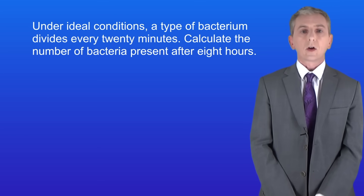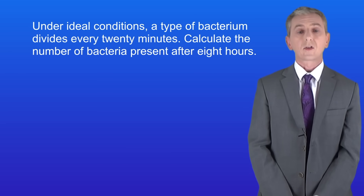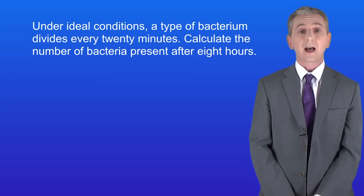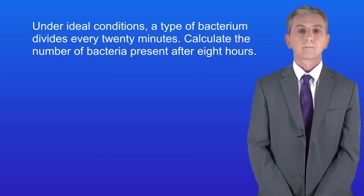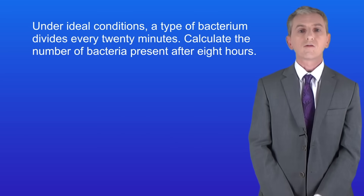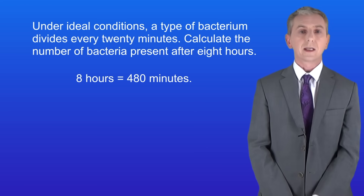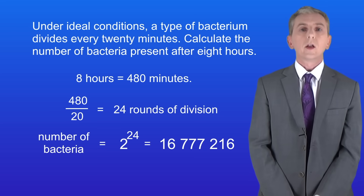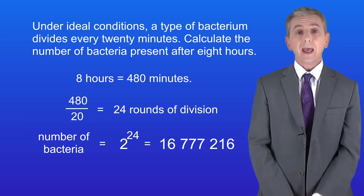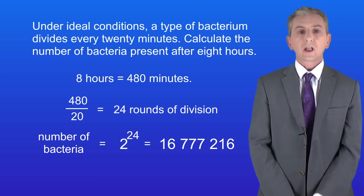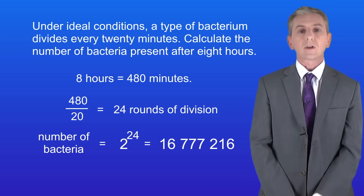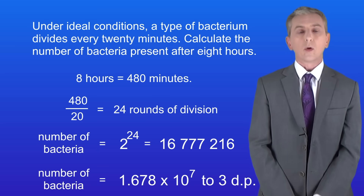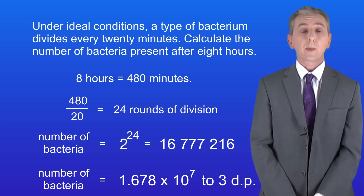Here's a question for you: under ideal conditions, a type of bacterium divides every 20 minutes. Calculate the number of bacteria present after eight hours. Pause the video now and try this yourself. Eight hours is 480 minutes. Dividing 480 by 20 tells us there are 24 rounds of division. The number of bacteria is 2 to the power of 24, which gives us 16,777,216 bacteria. In standard form, this is 1.678 times 10 to the power of 7, to three decimal places.